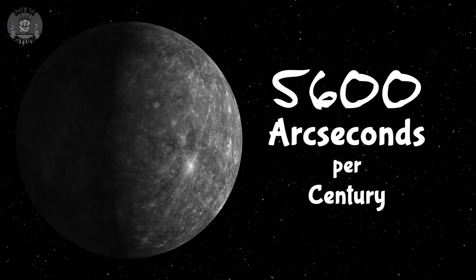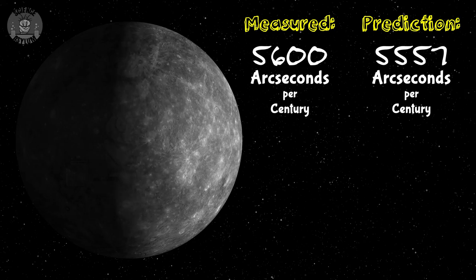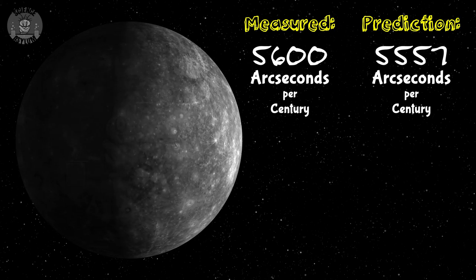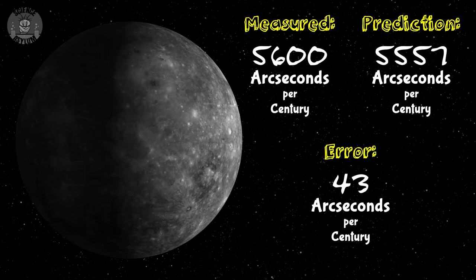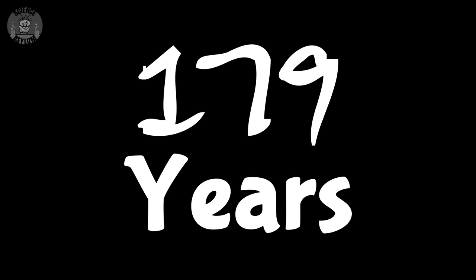We do have a minor problem though. When we consider all the tugs with Newton's laws, we only predict Mercury precesses by 5,557 arc seconds every century. The prediction is off by 43 arc seconds. That might sound small, but it means the prediction of the full cycle is off by 179 years. It cannot be written off as a measurement error. We'd have to wait until 1915 for Einstein and his friends to solve it.